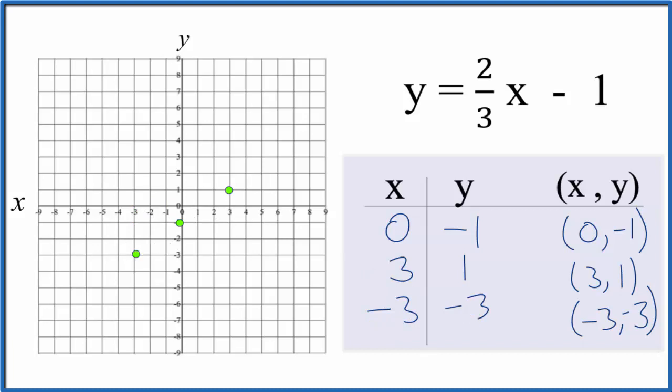You can see the points all line up. We could have used just two points, but this way, if we made a mistake, we would have caught ourselves. Let's put a line through this. Then we'll put arrows to show that this goes to infinity. So this is the graph for y equals two-thirds x minus one.